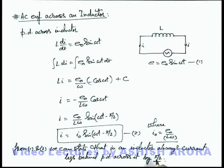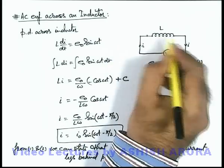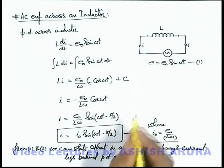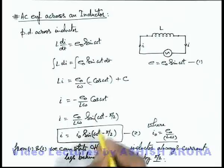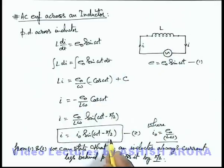So whenever an alternating current is passed through an inductor, its potential difference will always lead current by an angle π/2, or we can say current lags behind the potential difference by an angle π/2.